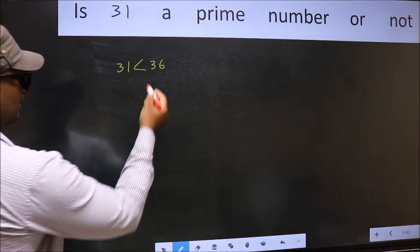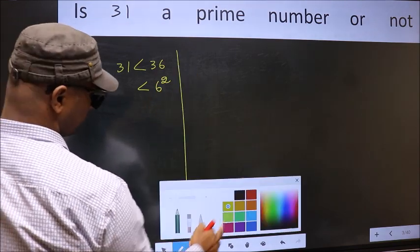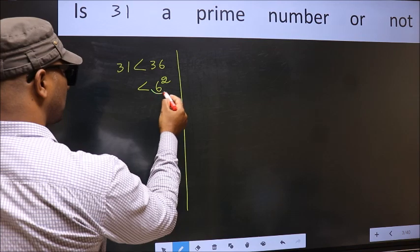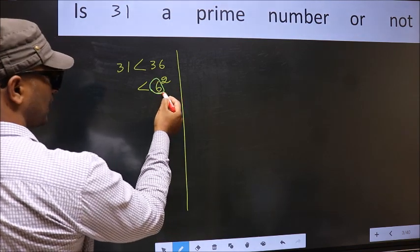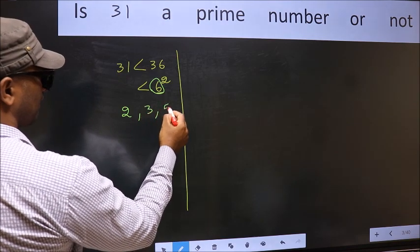Next, 36 is 6 squared. Now write all the prime numbers smaller than this number. They are 2, 3, and 5.